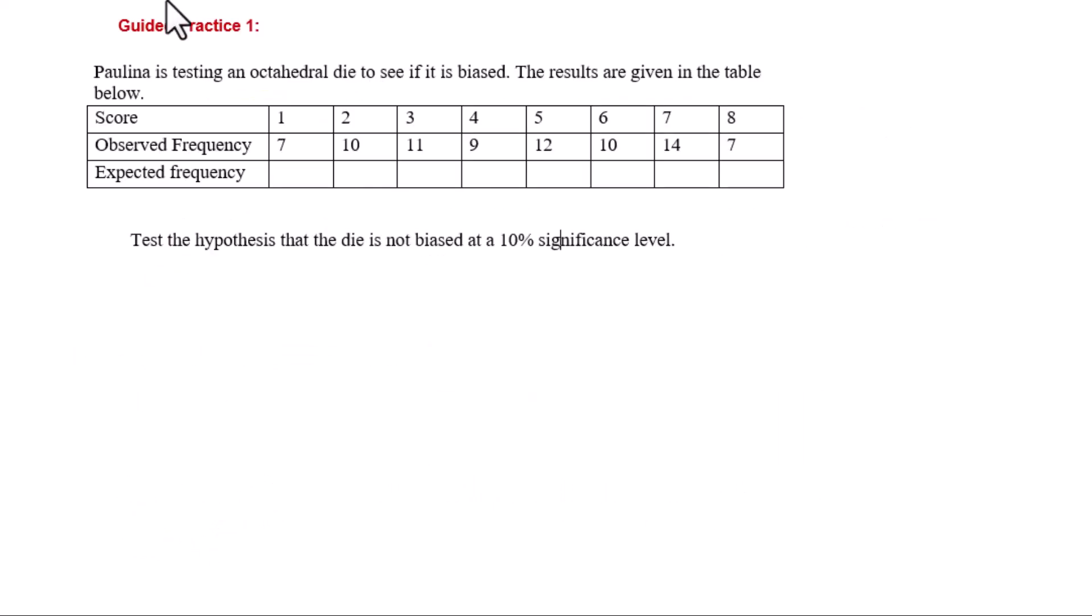Paulina is testing an octahedral die to see whether it is biased. The results are given in the table below. Test the hypothesis that the die is not biased at a 10% significance level.